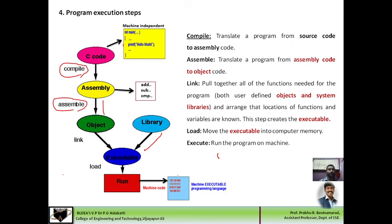To summarize the execution pipeline: the compiler is a translator which converts source code into assembly code. The assembler is a translator which converts assembly code into machine code. The link operation pulls together all the functions needed for the program, arranges the locations of functions and variables, and creates executable code. Finally, the executable code is loaded into computer memory for execution.